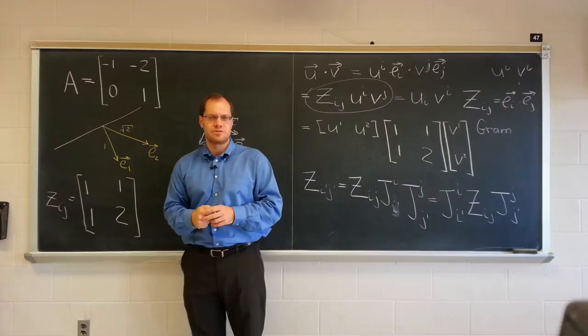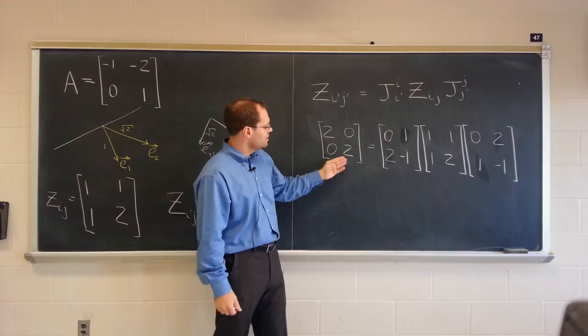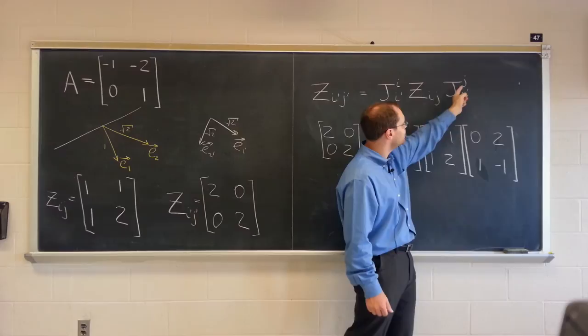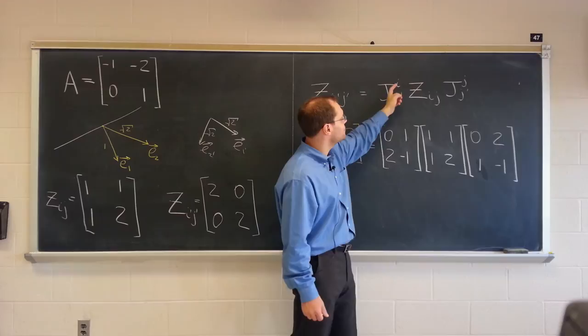Alright, and here it is, this identity in matrix form. The new gram matrix is related to the old gram matrix by this matrix on the right, and it's transposed on the left, because you see here it's proper contractions. Second index with the first, so that's straightforward matrix multiplication. But here it's the first index of this, so to make it into proper matrix multiplication, you have to transpose it.